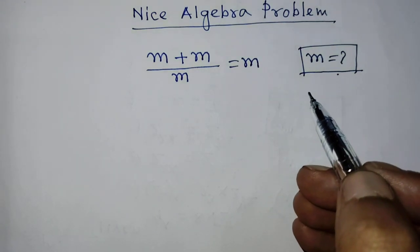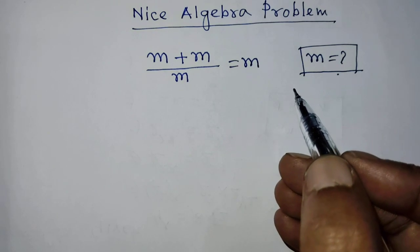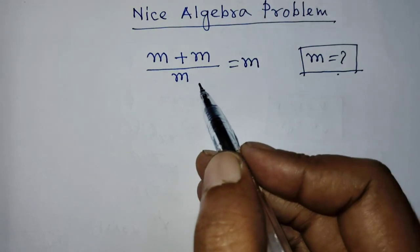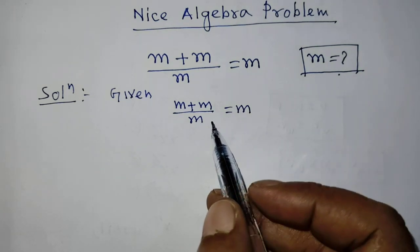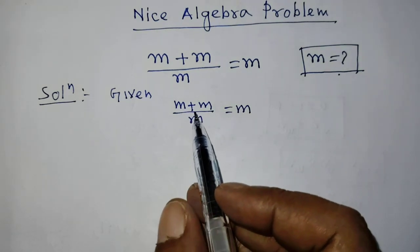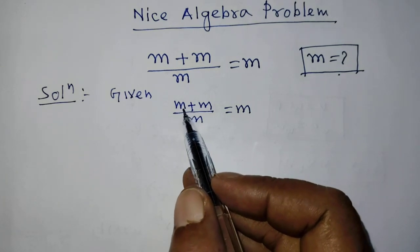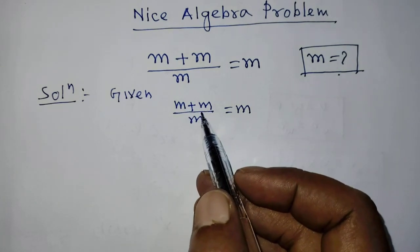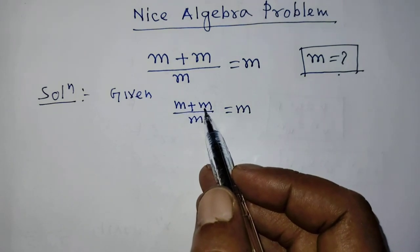Today I'm showing you how to find the value of m from this equation. In this equation, on the left-hand side in the numerator, there are two terms and the common factor of both terms is m.